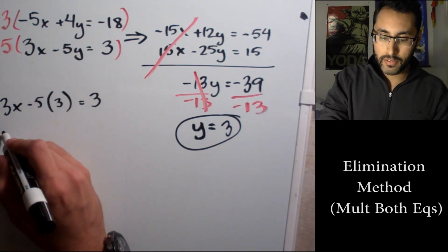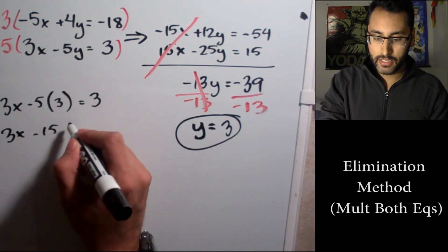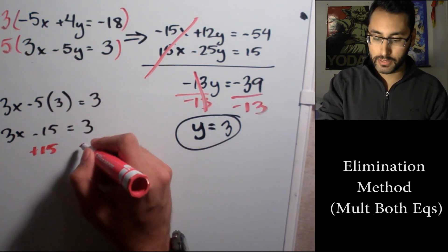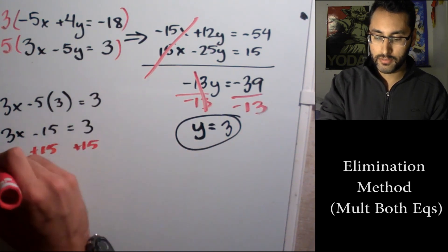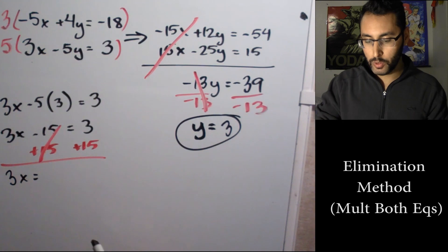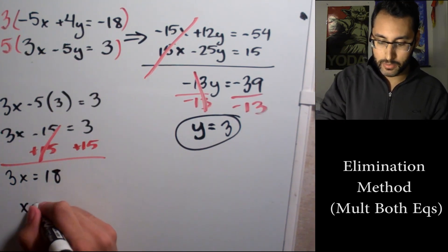We're gonna have 3x, -5 times 3 is -15, and it equals 3. So 3x - 15 = 3. Solving for x, we're going to add 15, the inverse of subtracting 15, to both sides. We're gonna have 3x = 18, and finally if you divide by 3, we get x = 6.